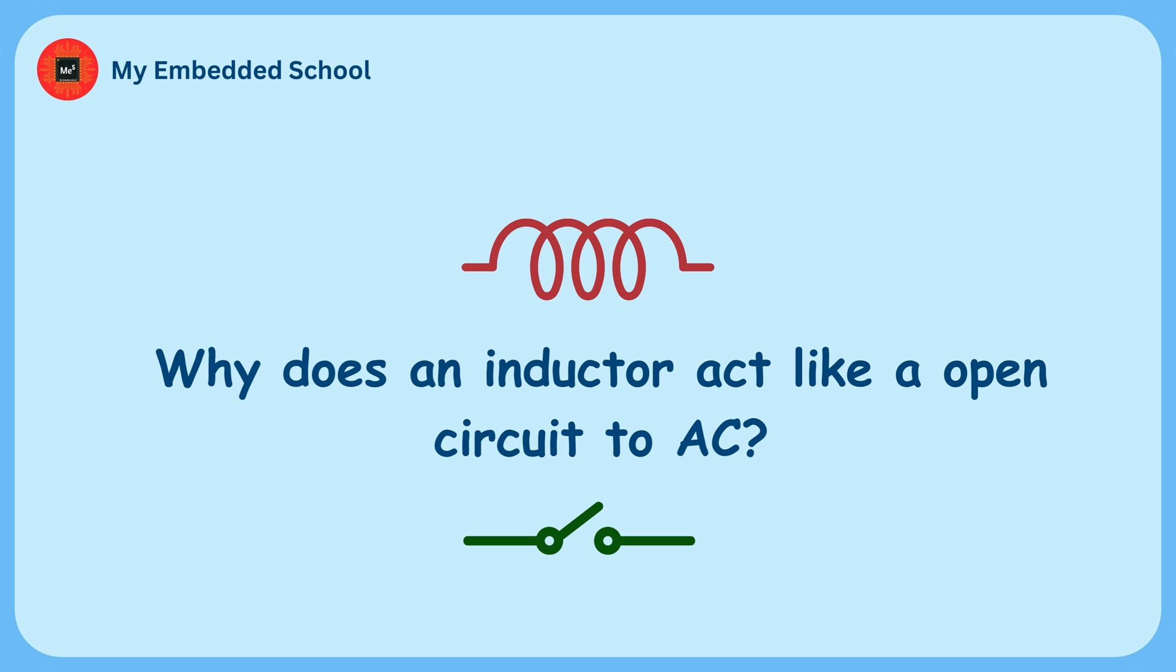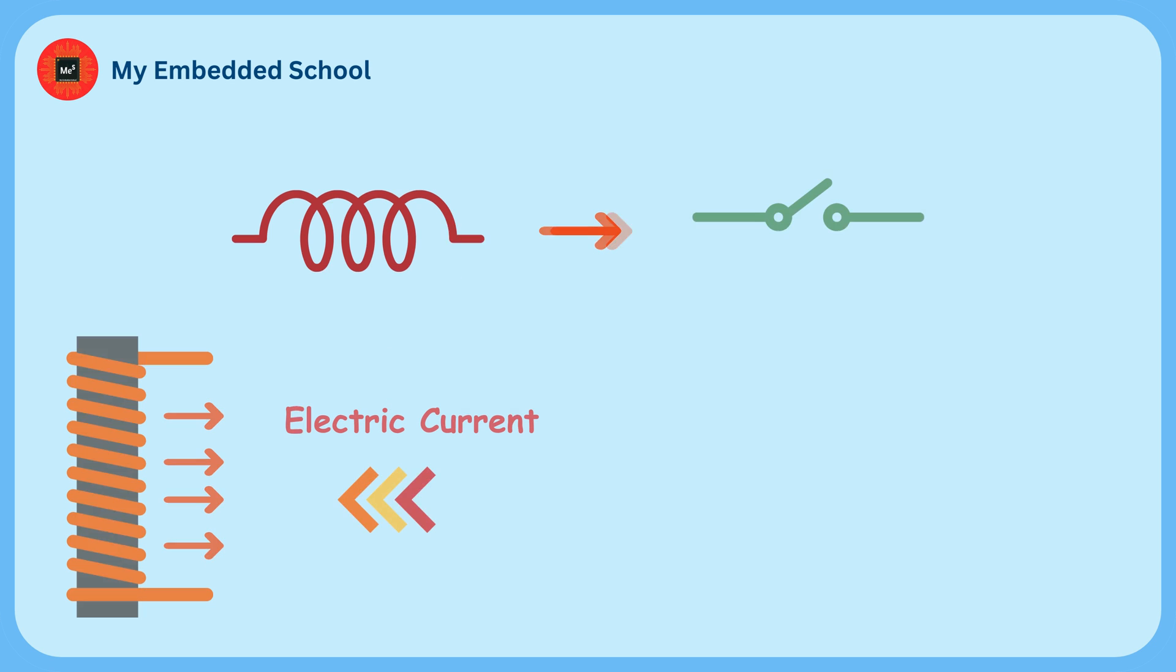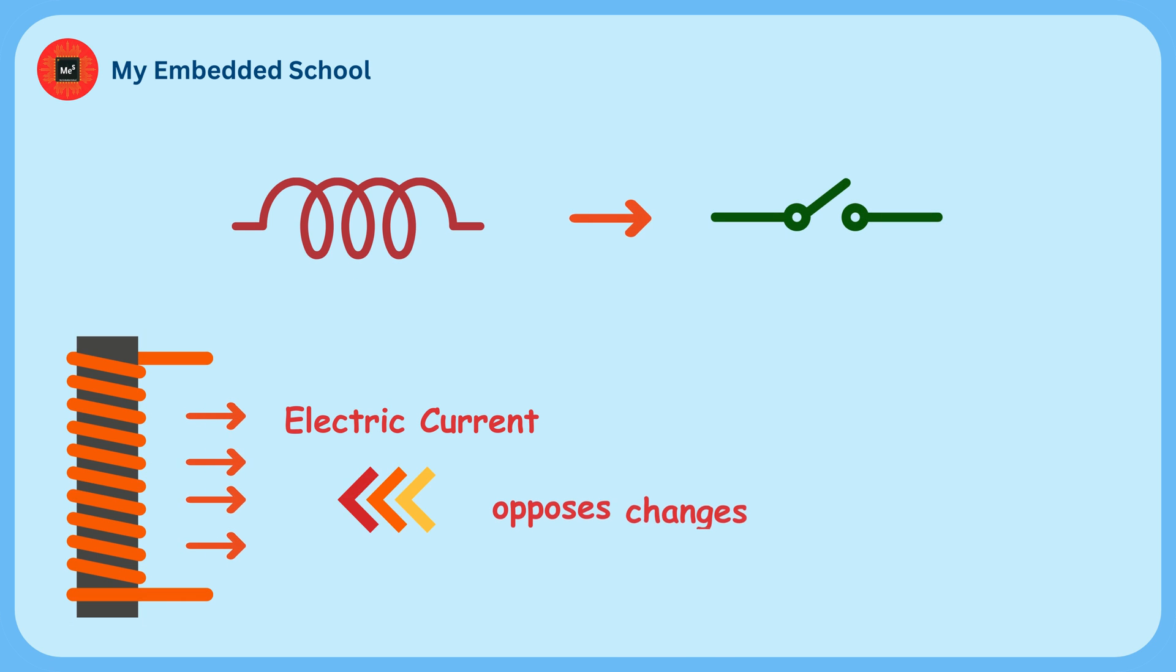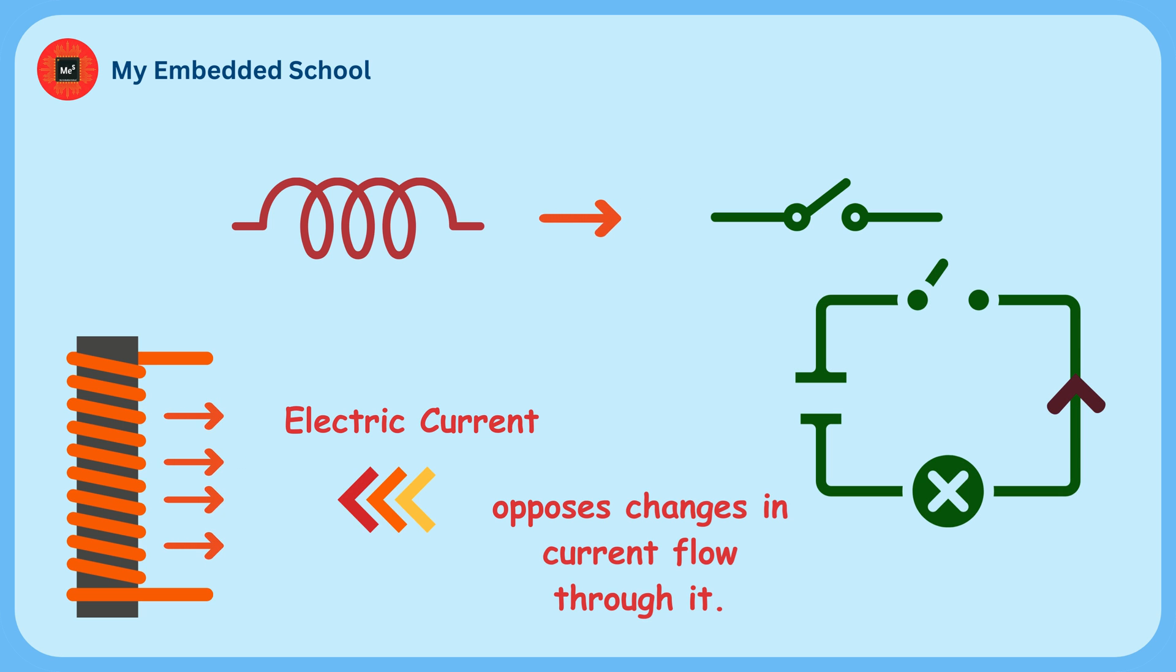Why does an inductor act like an open circuit to AC? An inductor acts as an open circuit at the time of switching because it opposes changes in current flow through it. When the switch is open and there is no current flowing through the inductor, the inductor will not allow any current to flow through it.